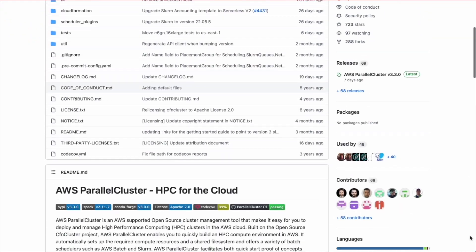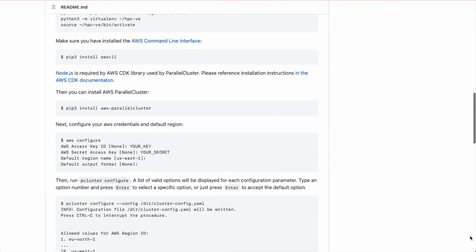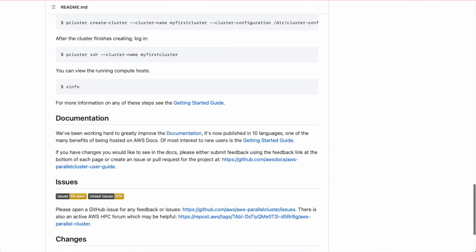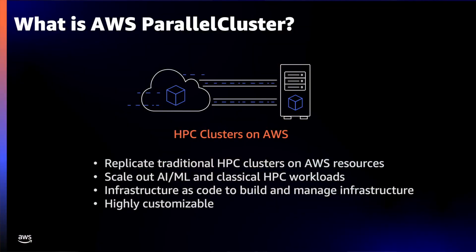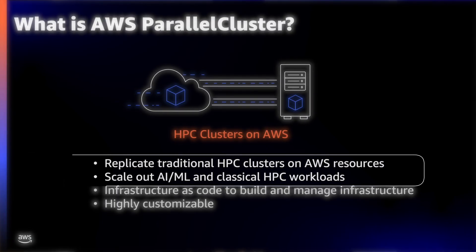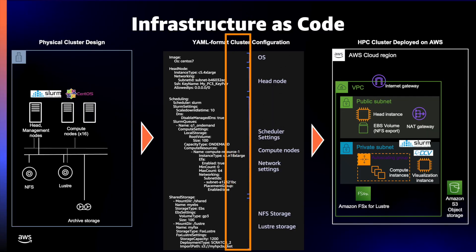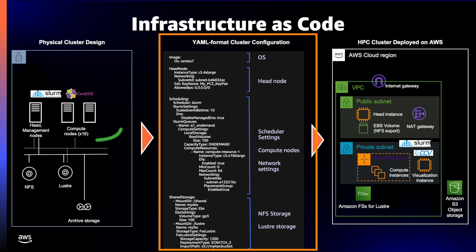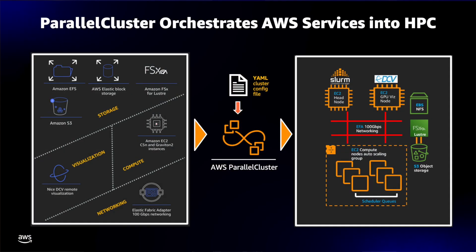Parallel Cluster is an open source cluster management tool developed by AWS with feedback from the broader HPC community. It enables you to build, manage, and use traditional HPC clusters, but with the elasticity and flexibility of AWS. Parallel Cluster is designed for scaling out traditional HPC and machine learning workloads without having to retool them to fit into cloud-native designs. It uses an infrastructure-as-code approach — you write a file that defines the broad characteristics of your cluster, maybe drawing inspiration from an existing physical design, and Parallel Cluster handles the undifferentiated heavy lifting of launching and managing it for you.